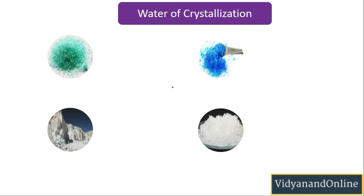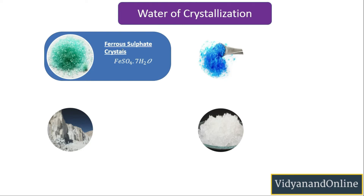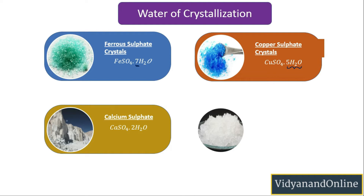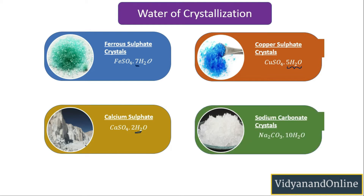Let us see certain salts which consist of water of crystallization as part of their structure. The green color crystals belong to ferrous sulfate, which contains seven molecules of water of crystallization. Next, copper sulfate crystals have the formula CuSO4·5H2O — five molecules of water of crystallization. Then, calcium sulfate crystals, which is basically gypsum, contains two molecules of water of crystallization. Finally, sodium carbonate crystals consist of 10 molecules of water of crystallization — and that is washing soda, which we are going to study now.